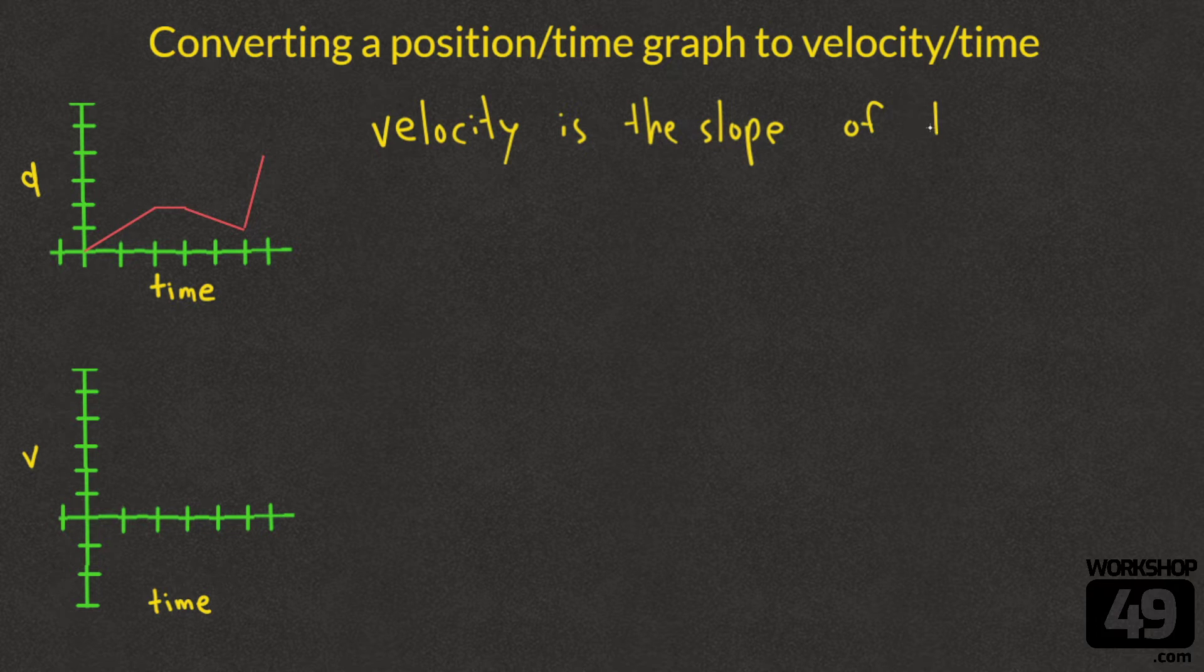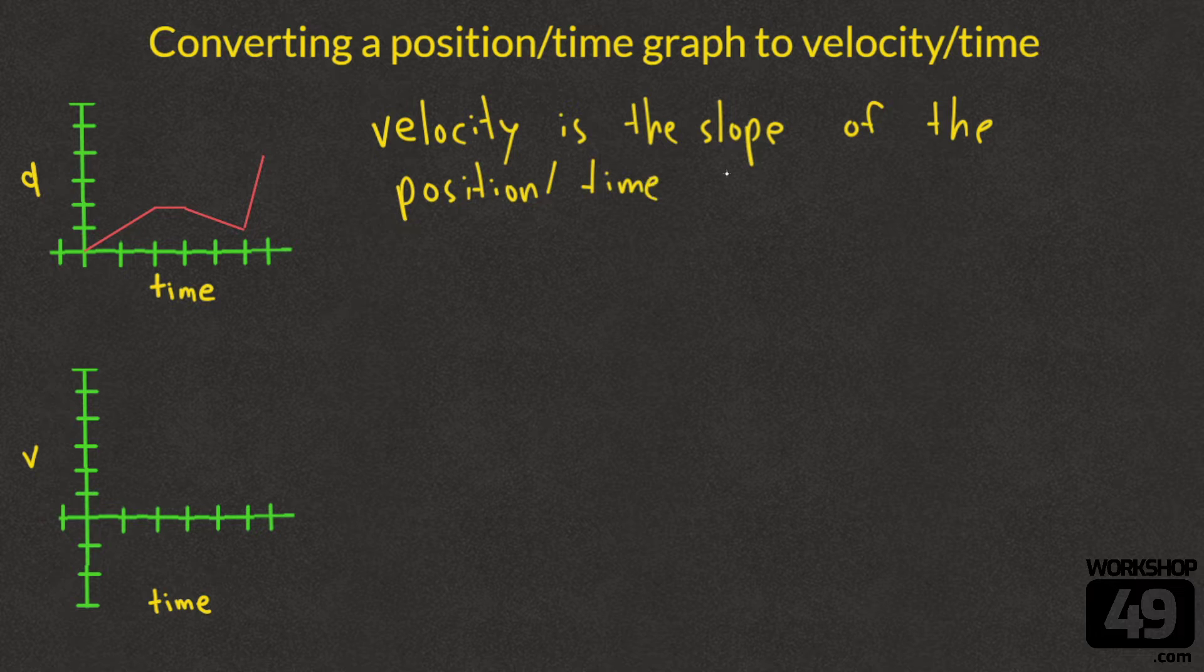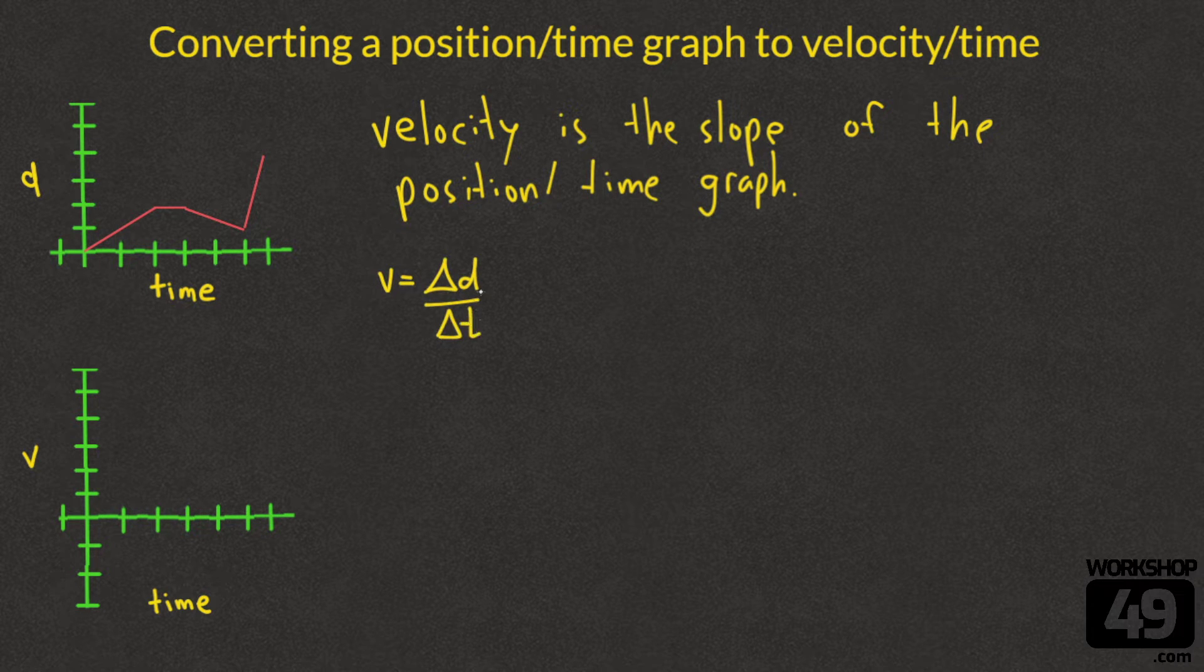The first thing that you have to remember is that the velocity is the slope of the position time graph. If you can understand that, you have got this totally made. That is the only concept we really need to drive in. Velocity is the slope. As long as we can figure out the slope in each region, we should be fine. So velocity is equal to the change in distance over the change in time in each little region.